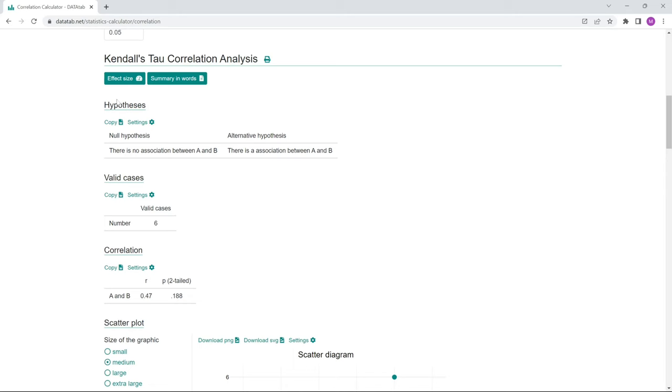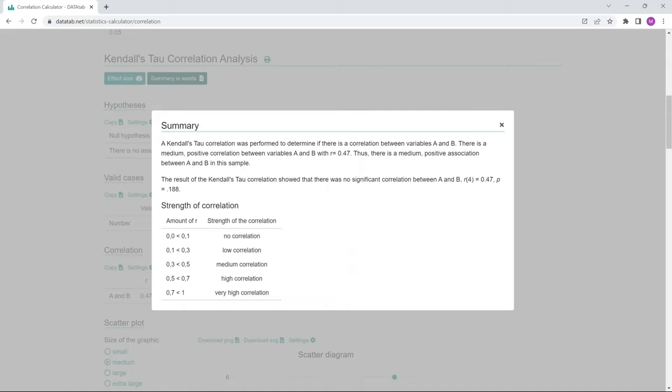A Kendall's Tau correlation analysis was performed to determine if there is a relationship between variables A and B. There is a medium positive relationship between variables A and B with R equal to 0.47. Thus, there is a mean positive correlation in this sample between A and B.